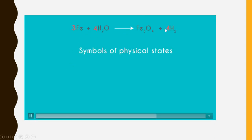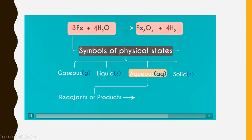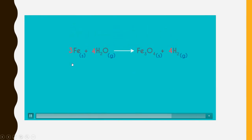This chemical equation can be more informative if we add symbols of their physical states. Physical states means gaseous state, liquid state, aqueous state or solid state. We are aware of gaseous liquid and solid. But then what is aqueous state? Aqueous state means when reactants or products they are present as solution in water. So when we place these states, now it is an informative balanced chemical equation.